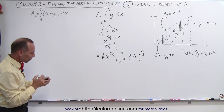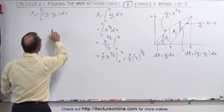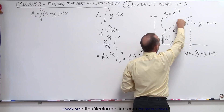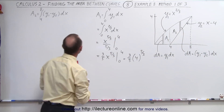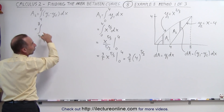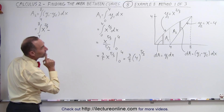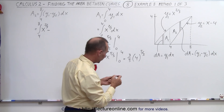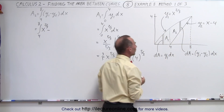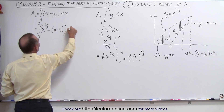Now we find the area A2, which goes from x equals 4 to x equals 8. The area element dA here is the upper y minus the lower y — that is y1 minus y2 — times the width dx. So this becomes the integral from 4 to 8 of x to the two-thirds minus the quantity x minus 4, all times dx.